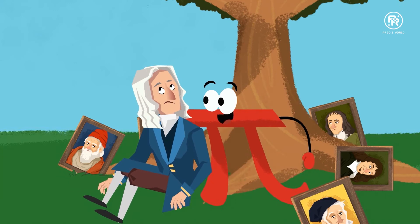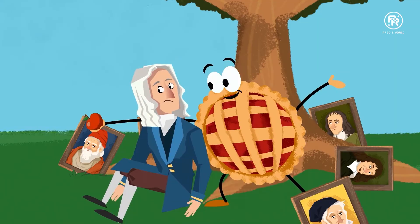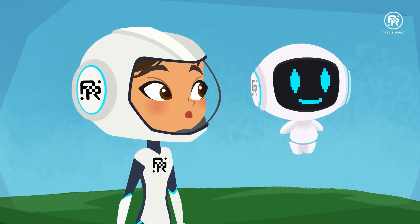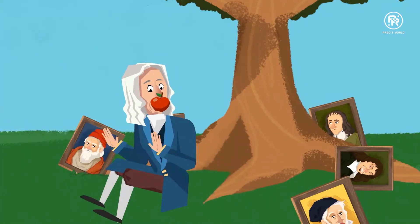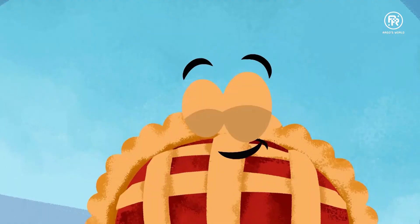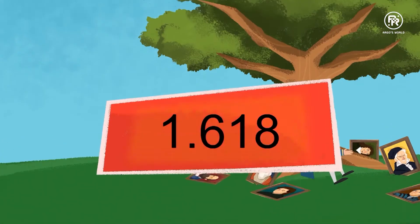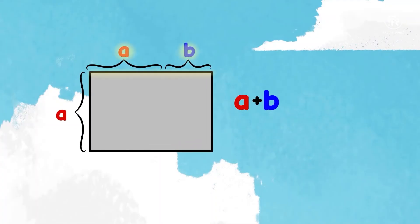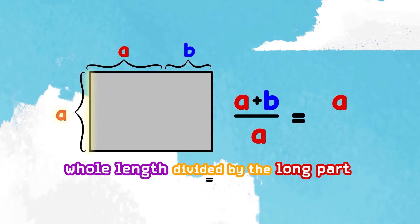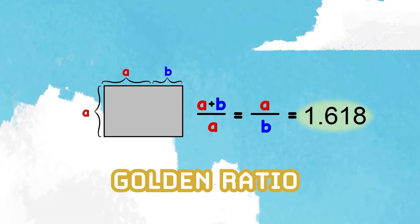Are you hungry? Would you like a piece of me? Maybe Newton over here can give us an apple and we can make apple pie. Who wants apple pie? Thank you, Pi. But I need to find the golden ratio. I can do that. The golden ratio is approximately equal to 1.618.